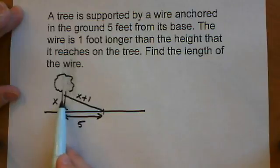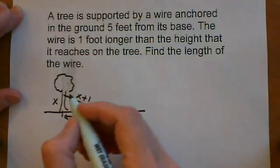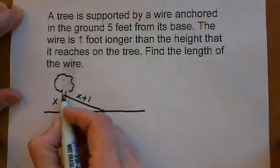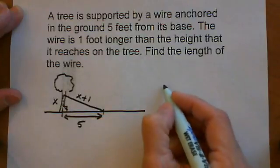Now we want to put these variables into an equation that relates them all. Because we have a right triangle, we're going to use the Pythagorean theorem.